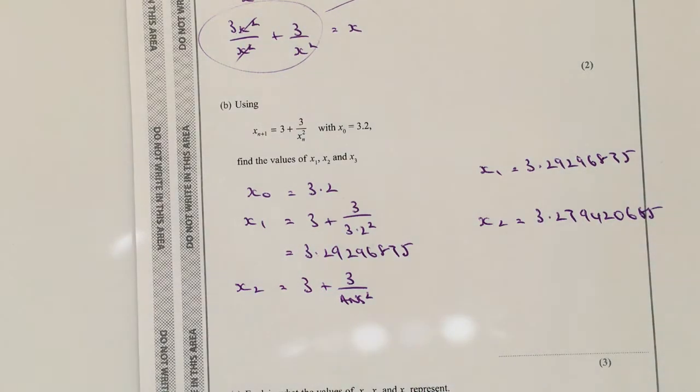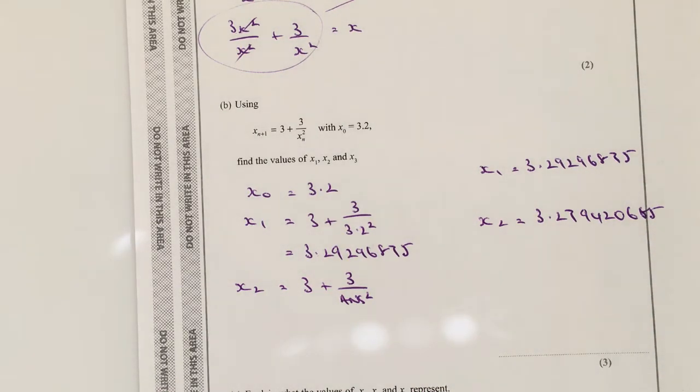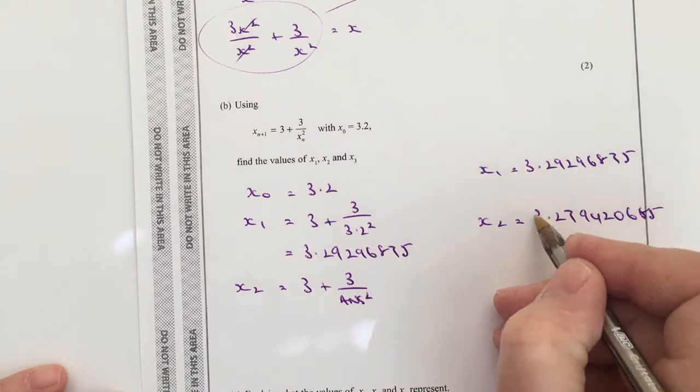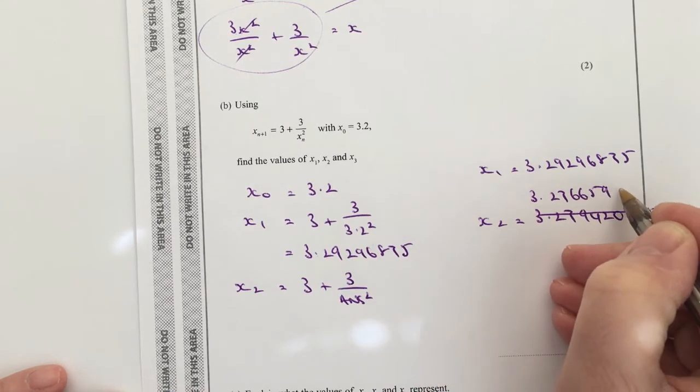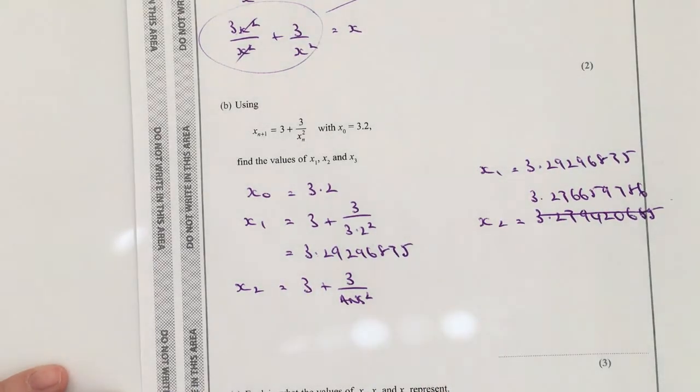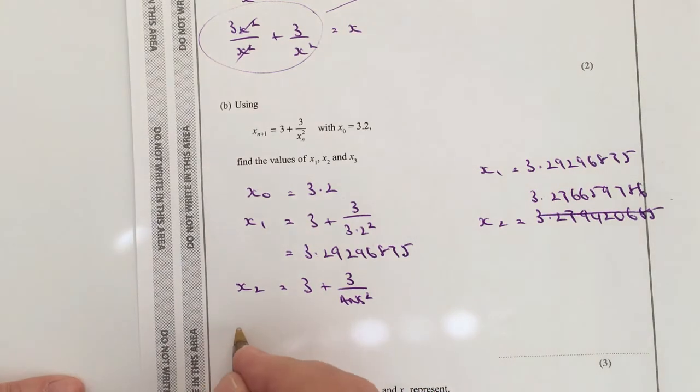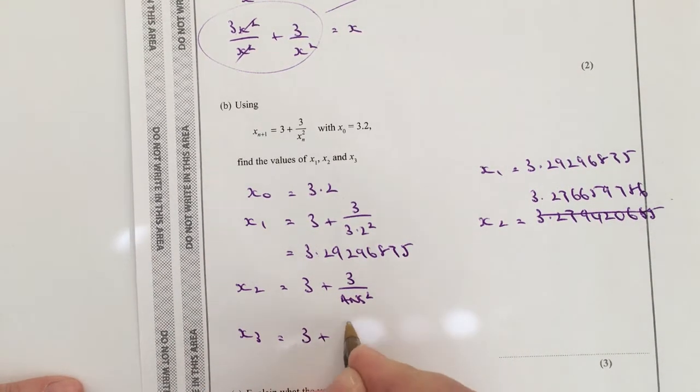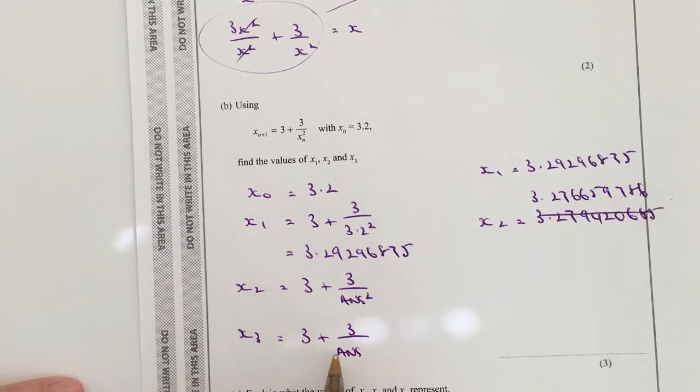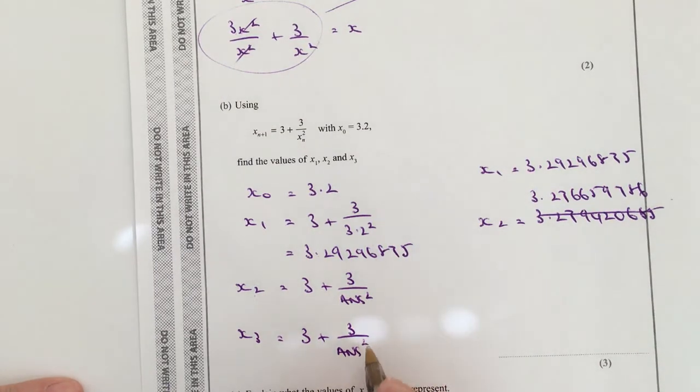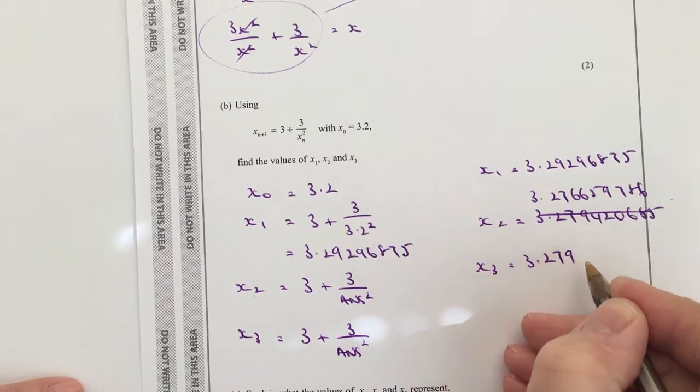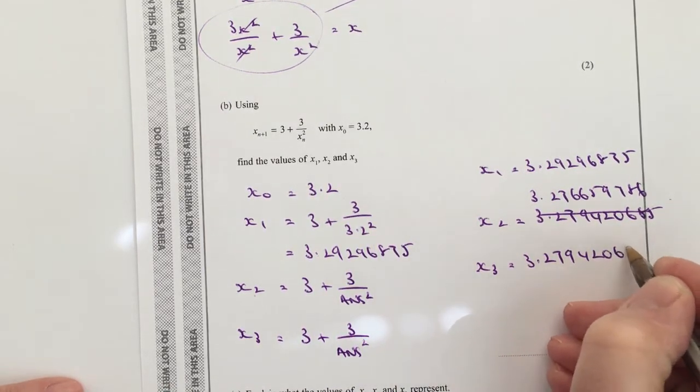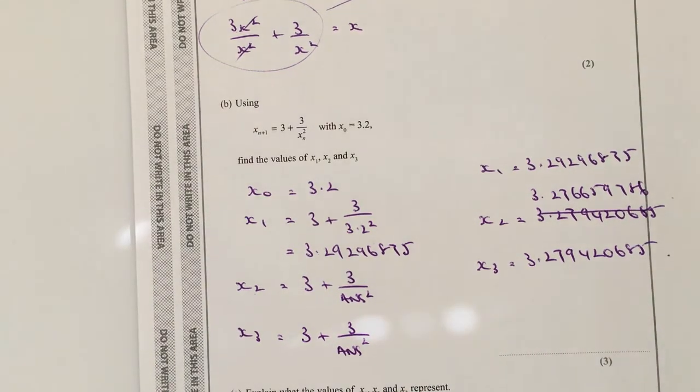Okay, brilliant. And then finally, x3. I'm going to again plug it straight into the formula, and that's the answer of x2, so it's all of this here, and I'm going to put that squared. That allows me then to work out x3, and that will be 3.279420685, and those are the three values that it's asked us to calculate.